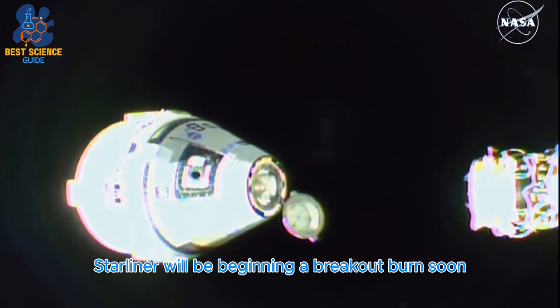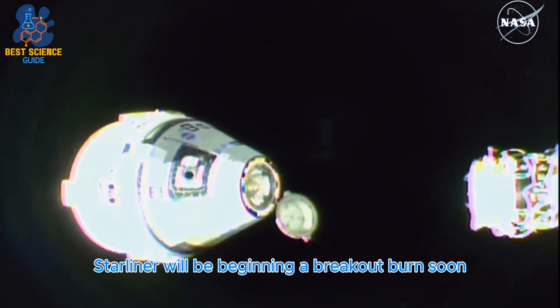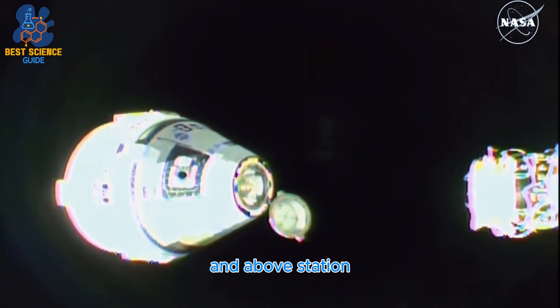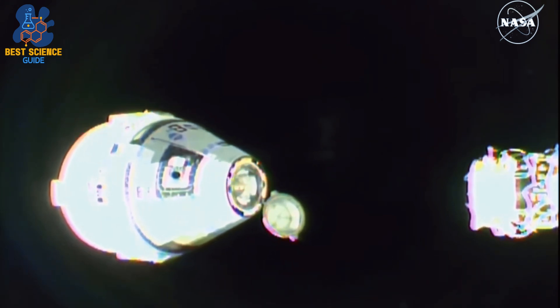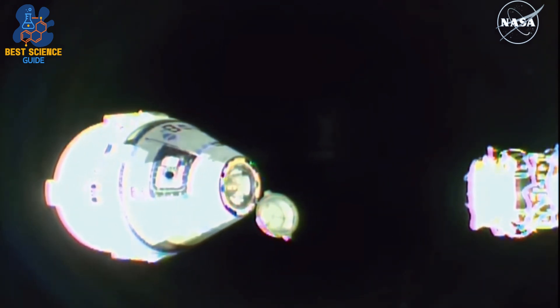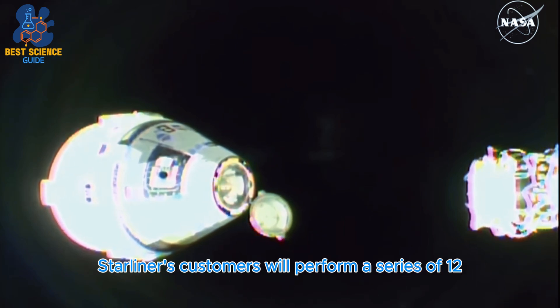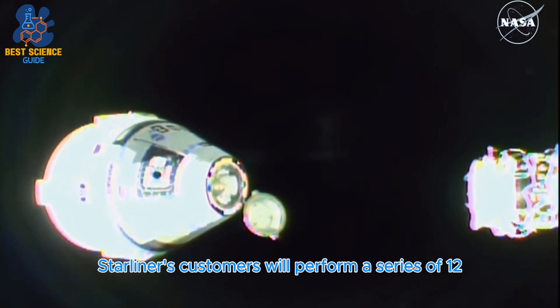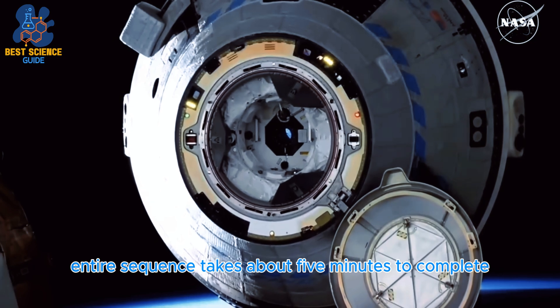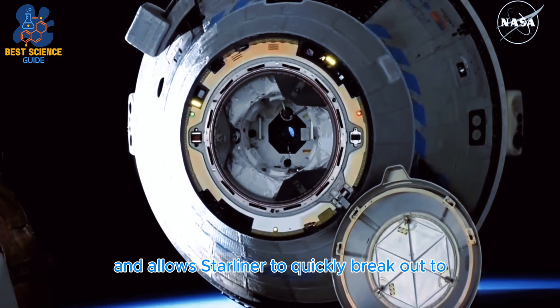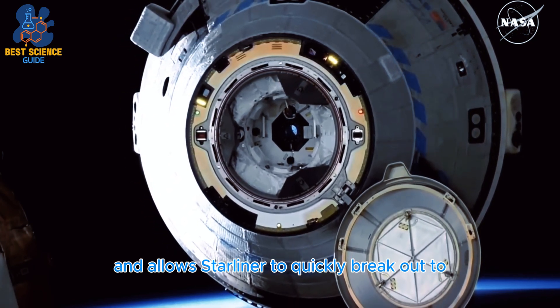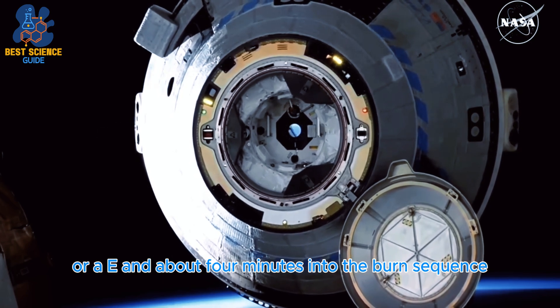Starliner will be beginning a breakout burn soon, which will take the spacecraft forward and above station. During this burn sequence, Starliner's thrusters will perform a series of 12 short firings. The entire sequence takes about five minutes to complete and allows Starliner to quickly break out to outside the approach ellipsoid or AE.